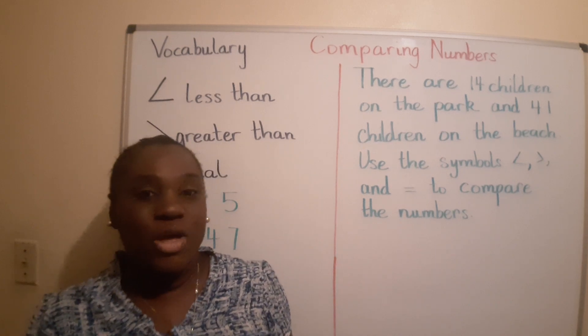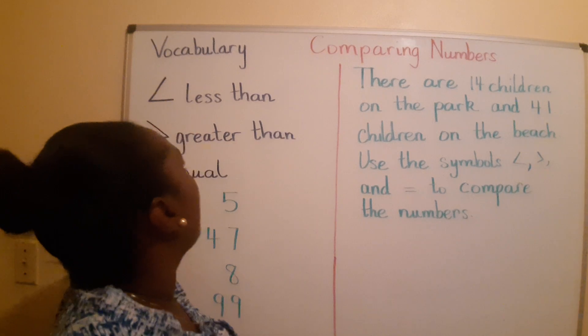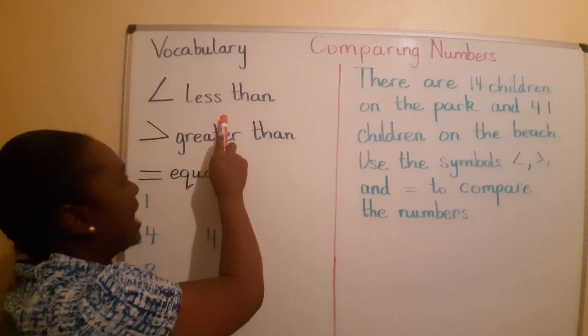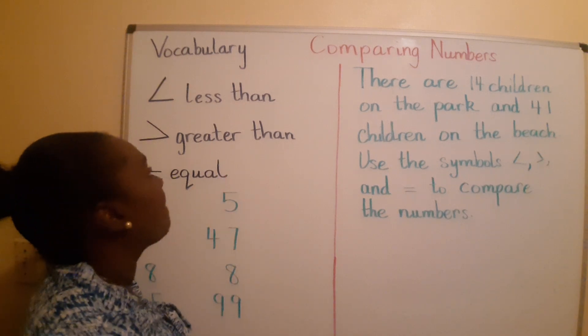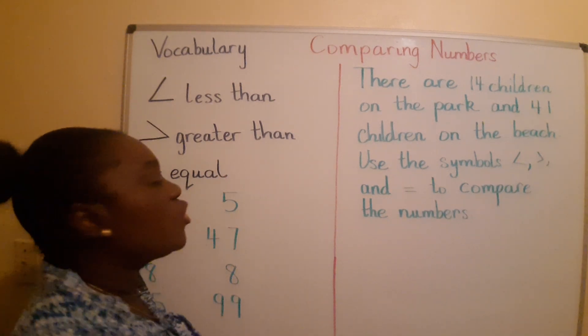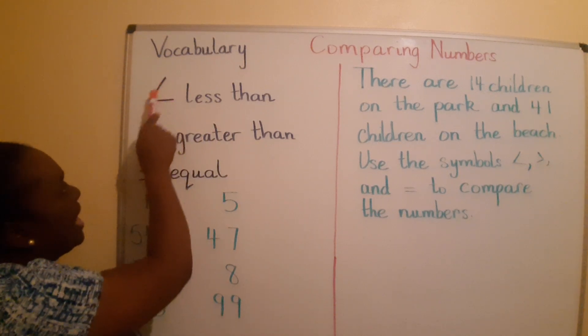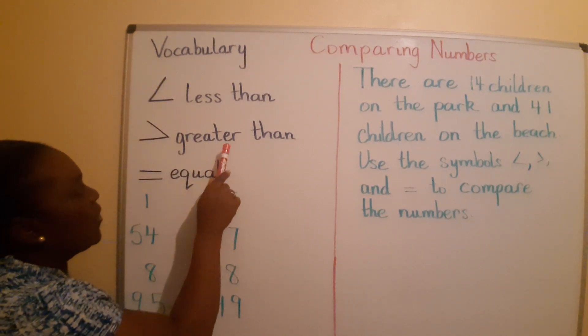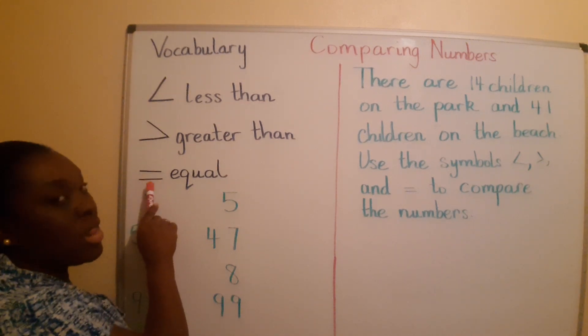Now let's look at some of our vocabulary for today. We have less than, greater than, and equal. And we have symbols to go along with them. Less than, this is the less than sign. Then we have greater than, and we have the equal sign.